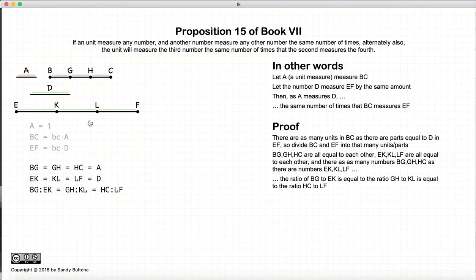Now because all of these are equal to A and all of these are equal to D, then the ratio of BG to EK and GH to KL and HC to LF is equal to the ratio of A to D. So all of these ratios are equal.